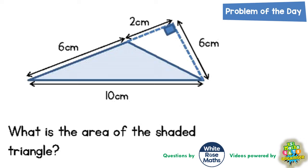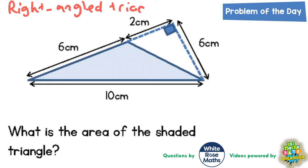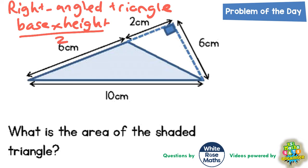Welcome, problem solving fans, to another problem of the day. This one is all about the area of some triangles — in particular the shaded triangle. There is a way of finding the area of a right-angled triangle: base times height divided by two. That only works for a right-angle triangle. As you can see, the shaded triangle is not a right-angle triangle — this angle here is not a right angle — so we can't use base times height divided by two just on that shaded triangle.